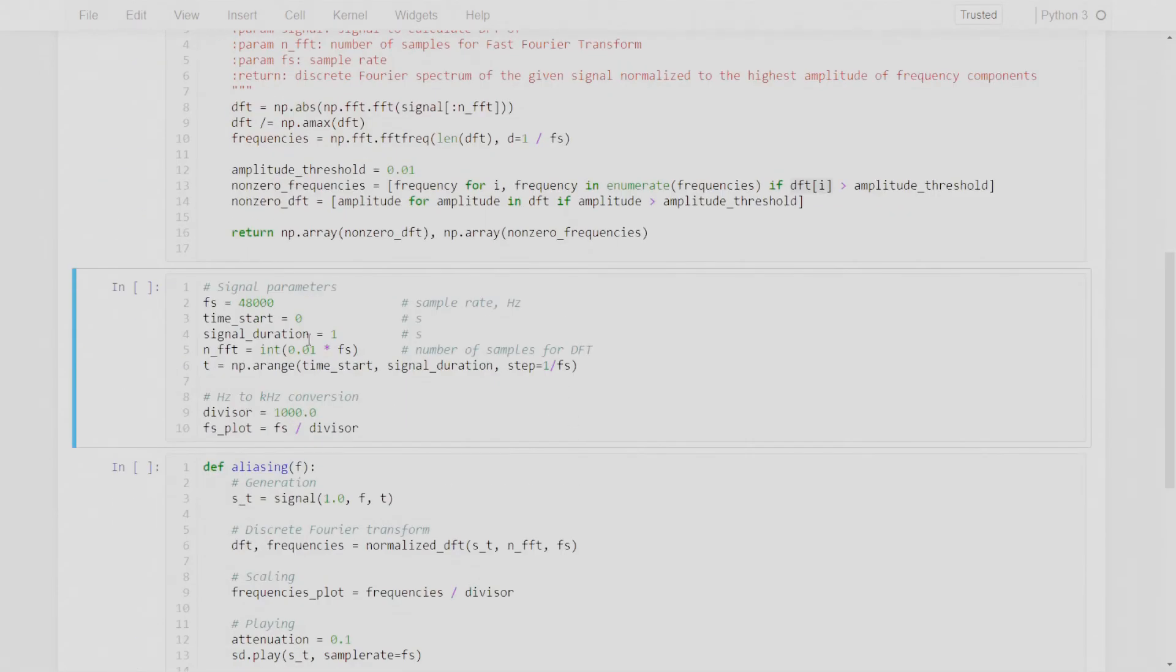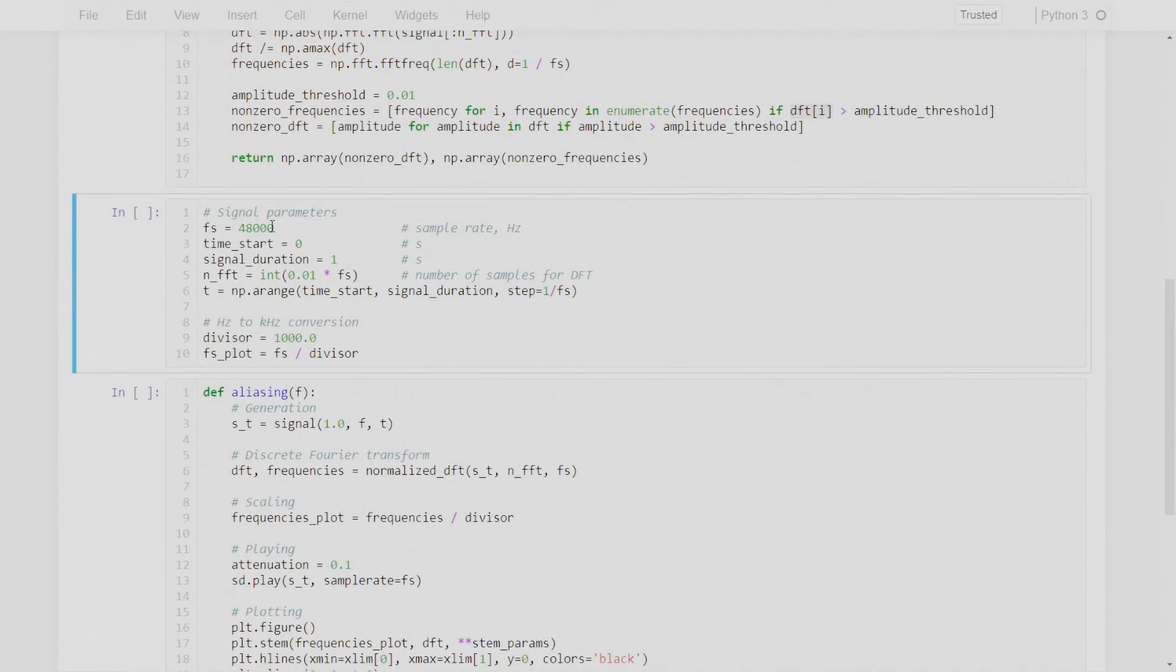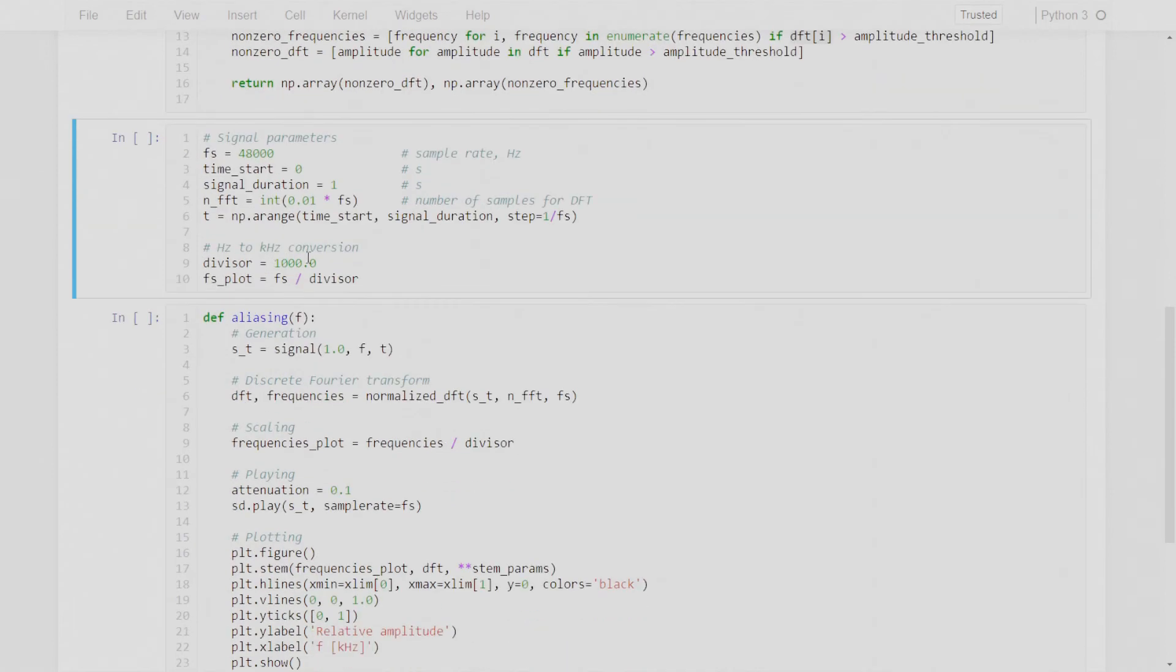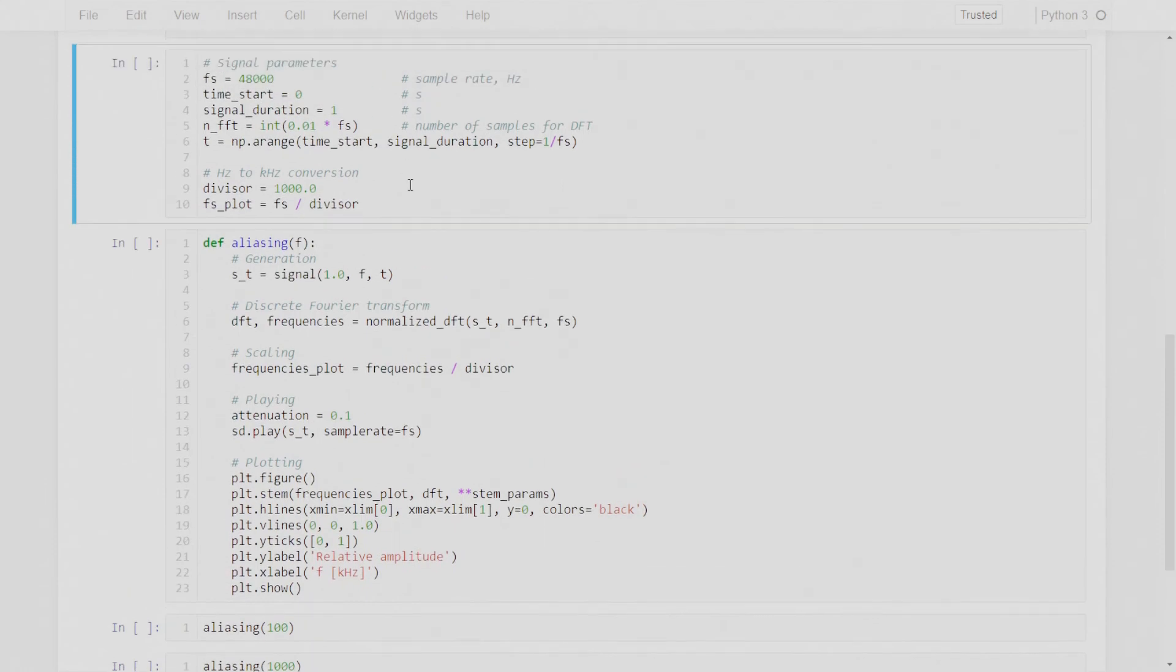Here I define some of the parameters I'm going to use. It's 48 kilohertz sampling rate and duration of the signal is one second. And here I have a 10 millisecond frame that I will compute discrete Fourier transform from. And I'm going to rescale the plot not to show values in hertz but rather in kilohertz so it'll be more feasible.